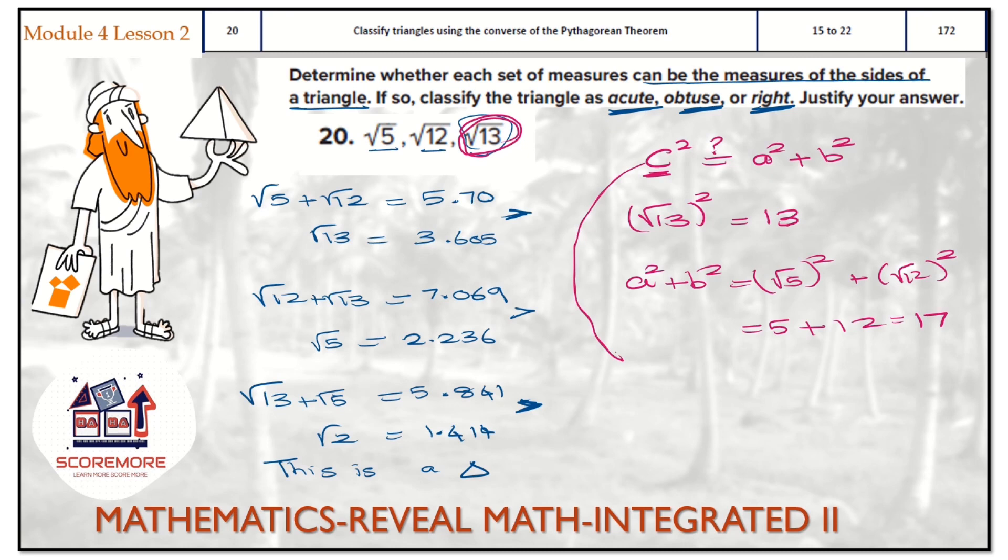Compare them. So here, c squared which is 13 is less than a squared plus b squared, which is 17. So the symbol is less than. So we end up with acute triangle. Hope you understand. And it's quite easy.